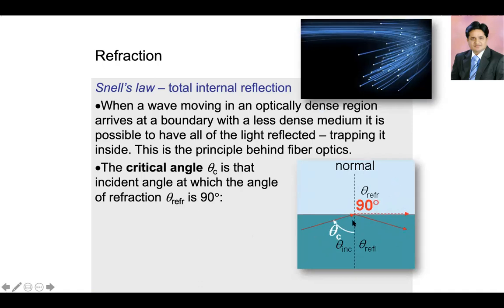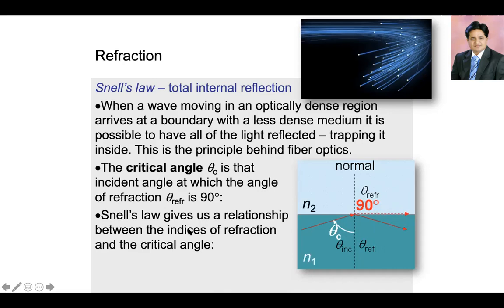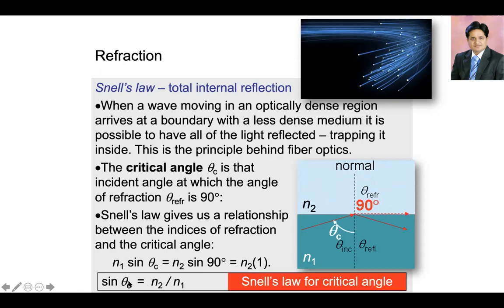The critical angle is the angle of incidence in the denser medium for which the angle of refraction in the rarer medium is 90 degrees. Using Snell's law: N1 × sin(θC) = N2 × sin(90°). Since sin(90°) = 1, we get N1 × sin(θC) = N2. Therefore sin(θC) = N2 / N1, and θC = sin⁻¹(N2 / N1).